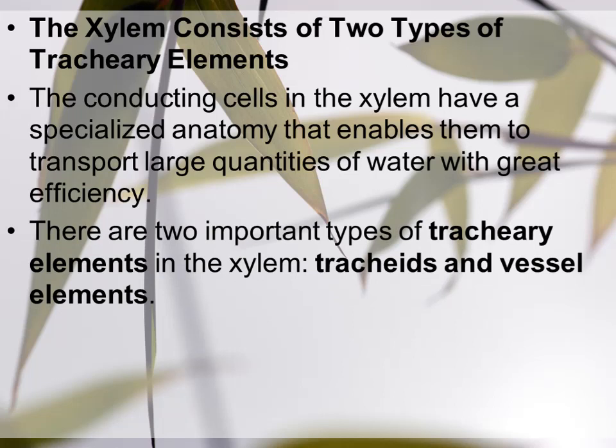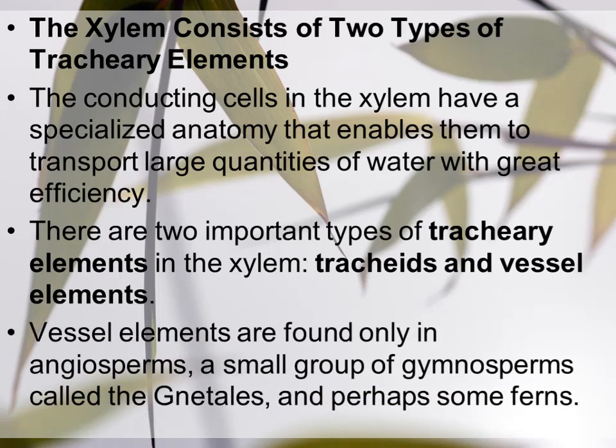There are two important types of tracheary elements in the xylem: tracheids and vessel elements. These are the two main cells through which water conduction occurs in xylem tissue — carrying water from source to different parts of the plant body. The roots act as the source where water absorption occurs, while the stem, branches, leaves, flowers, and fruits are the sink.